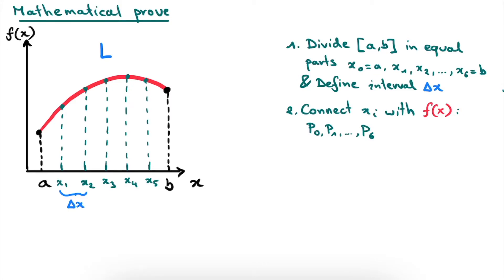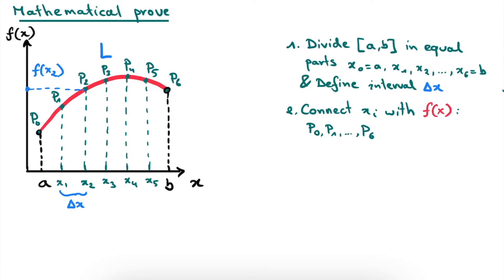The subscript i in xi and pi is simply a placeholder for a general index going from 0 all the way to 6. Doing this procedure, we get seven points on our graph: p0, p1, p2, p3, p4, p5, and p6. If we connect these points with the vertical f(x)-axis, we get the value f of xi — for example, we get f of x2 by connecting p2 with the vertical axis, and this will be important later on. The third step is to connect all of these points with straight lines, and the length of each line we denote with li, where i is the index from 0 to 6.